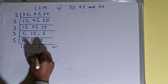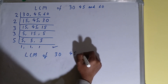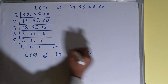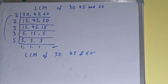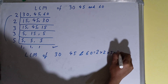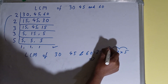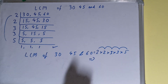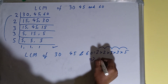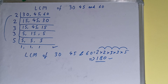Now the last step: the LCM of 30, 45, and 60 equals the product of all the prime factors on the left-hand side, that is 2 × 2 × 3 × 3 × 5. So 3×5 = 15, ×3 = 45, ×2 = 90, ×2 = 180. The LCM of 30, 45, and 60 is 180.